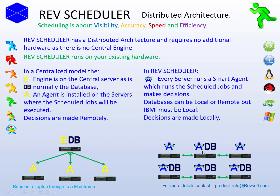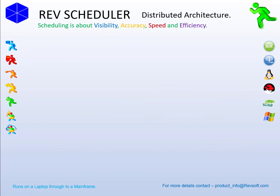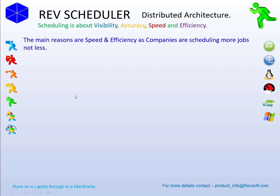So in this scenario, we have three servers and three decision makers, versus the centralized scenario of four servers and one decision maker. Why the distributed model as opposed to the centralized model? Two main reasons: speed and efficiency.